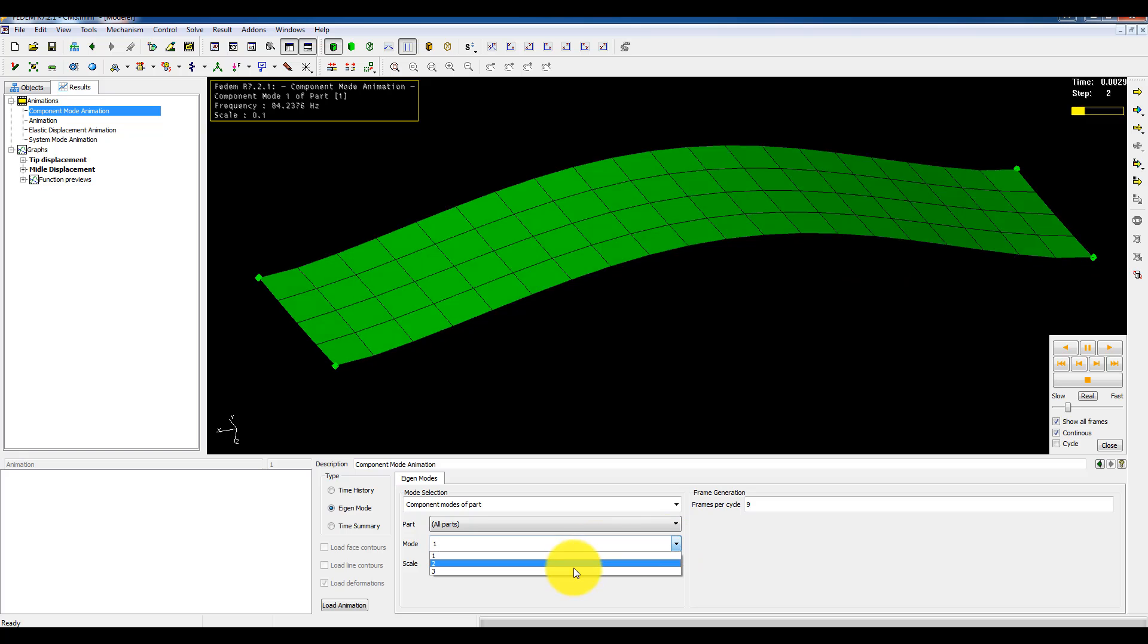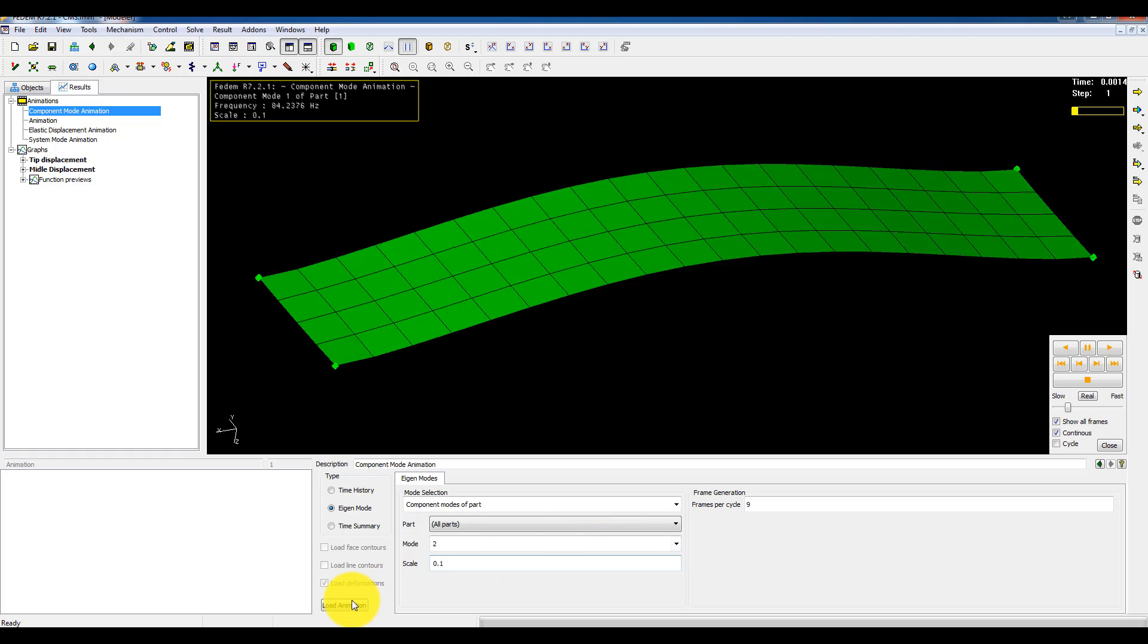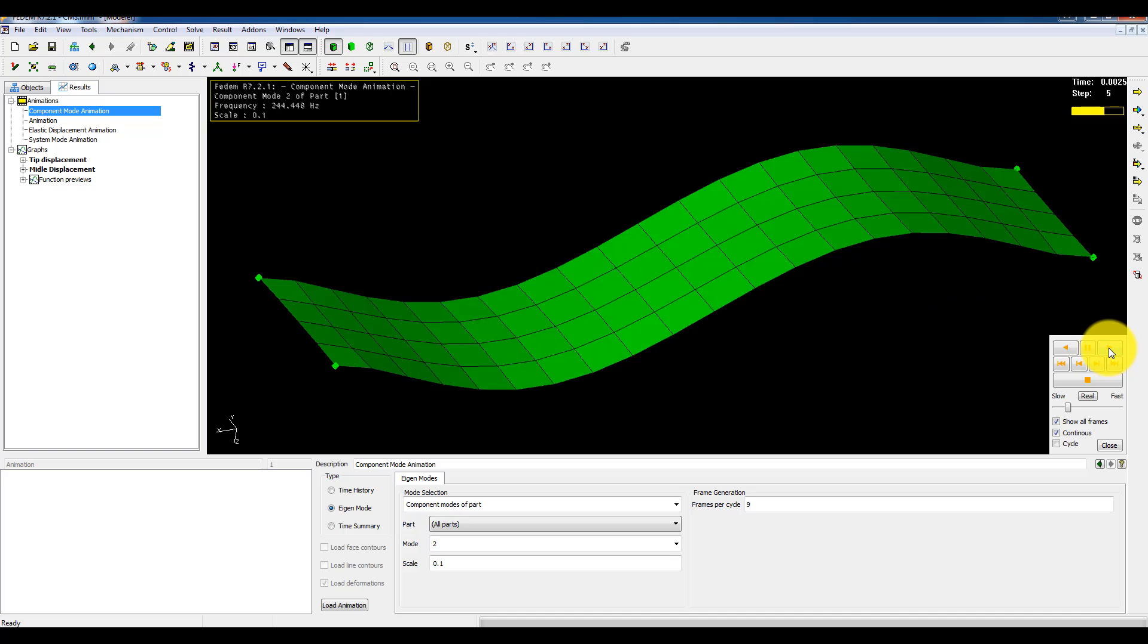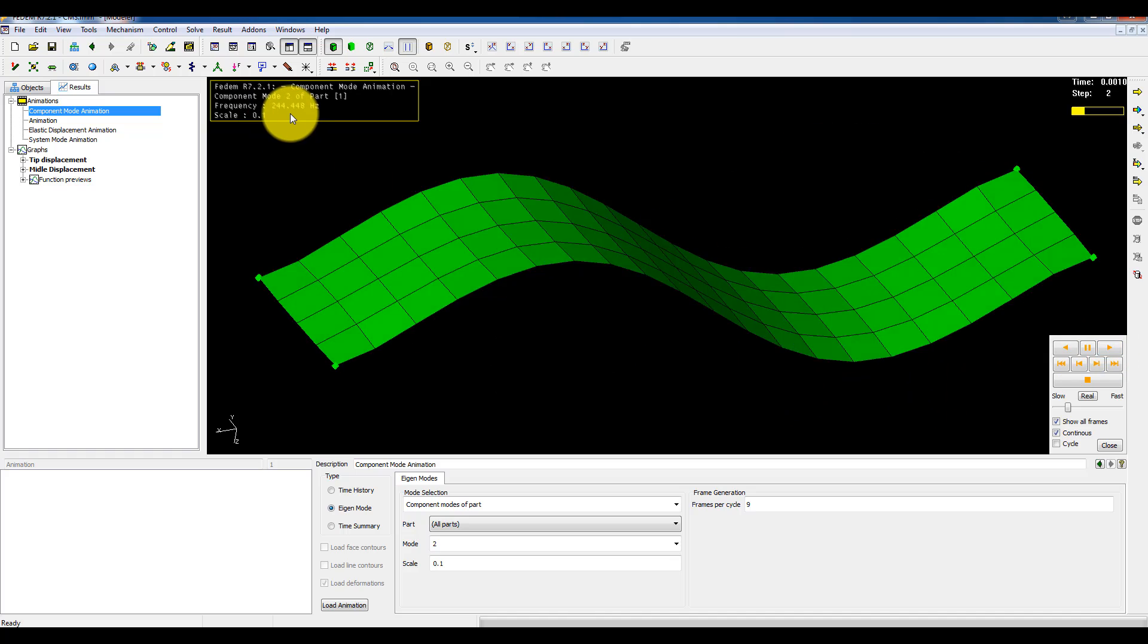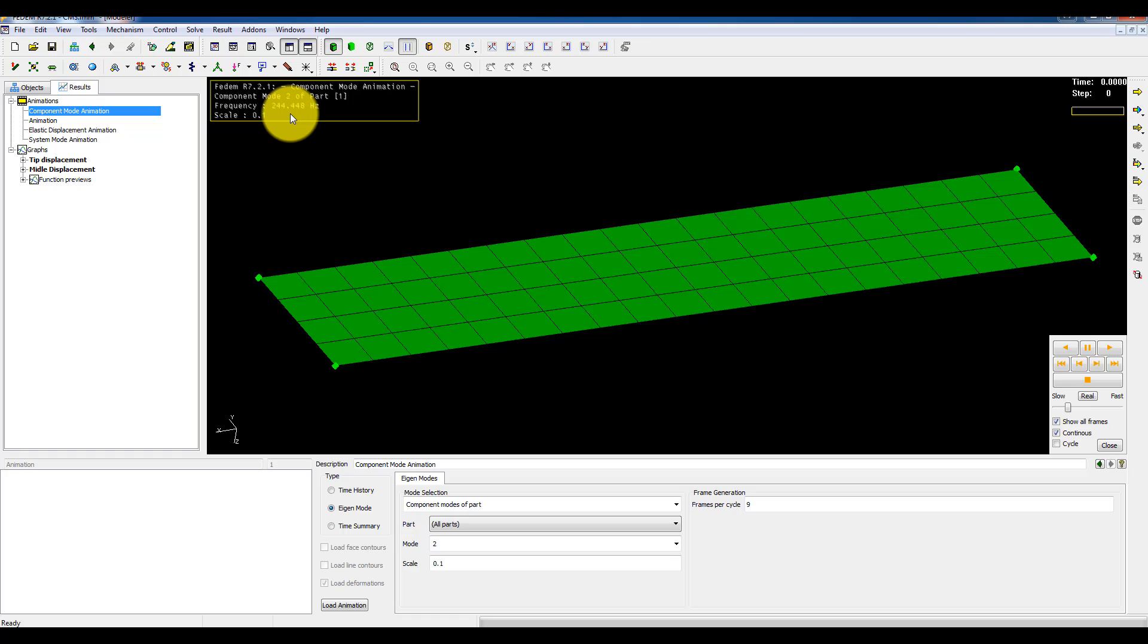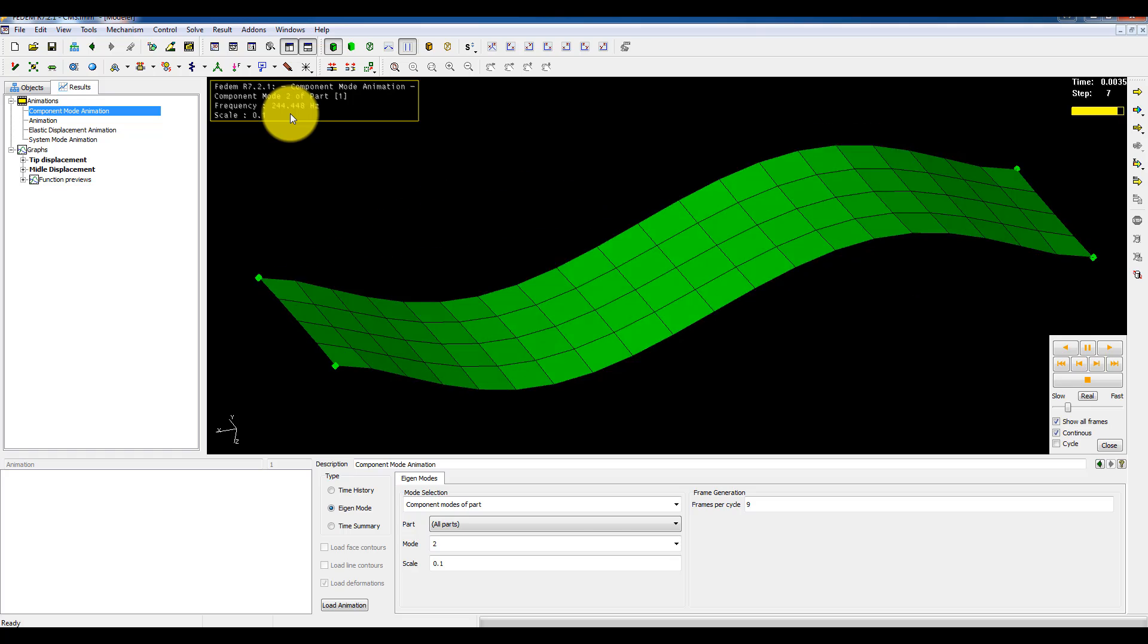I can take a look on the next one since I included three modes. This is the second fixed interface normal mode. It has an eigenfrequency of 244 Hz. So the question again is do I have loads acting in this frequency range? If yes, I must include this mode as well.